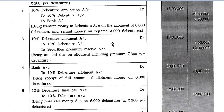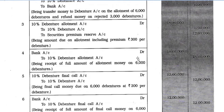Entry 3: 10% Debenture Allotment account debit Rs. 18,00,000 to 10% Debenture account Rs. 6,00,000 and to Security Premium Reserve account Rs. 12,00,000 — being amount due on allotment including premium of Rs. 300 per debenture. Entry 4: Bank account debit Rs. 18,00,000 to 10% Debenture Allotment account Rs. 18,00,000 — being receipt of full allotment money on 6,000 debentures.